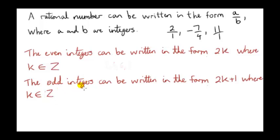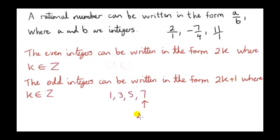Now what about the odd integers? Let's just take some of the positive odd integers: 1, 3, 5, 7. They can be written in the form 2 times some integer plus 1. For example, 7 can be written as 2 times 3 plus 1. We can do that for all odd integers.